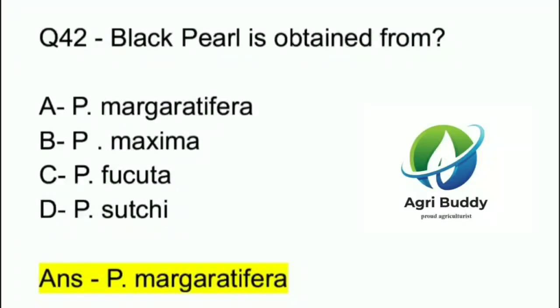Question 42. Black pearl is obtained from? A. P. margaritifera. B. P. maxima. C. P. fucata. D. P. suchi. And the answer is P. margaritifera.